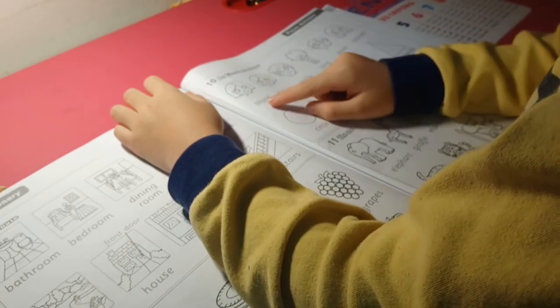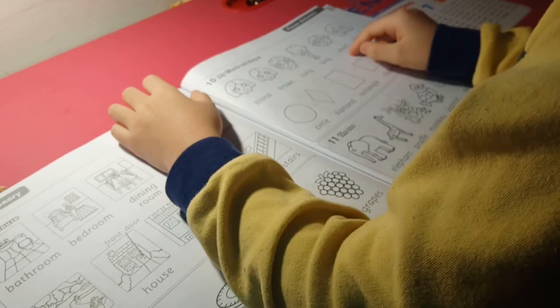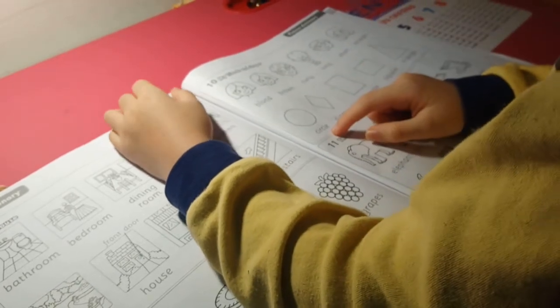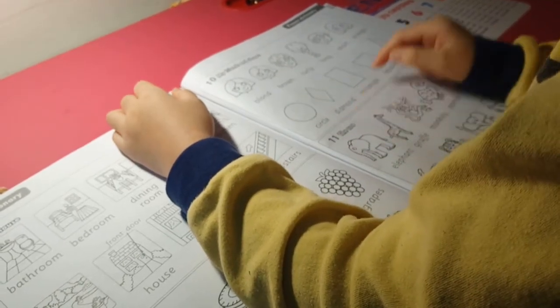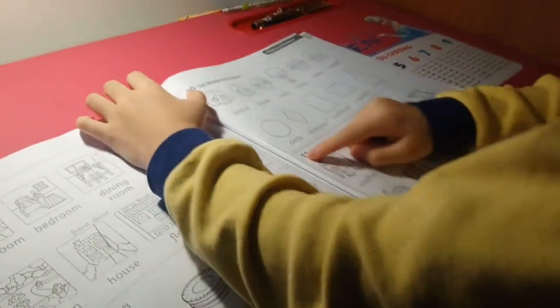My friends and shapes. Blonde, brown, curly, long, short, straight. Circle, diamond, rectangle, square, triangle. Eleven.